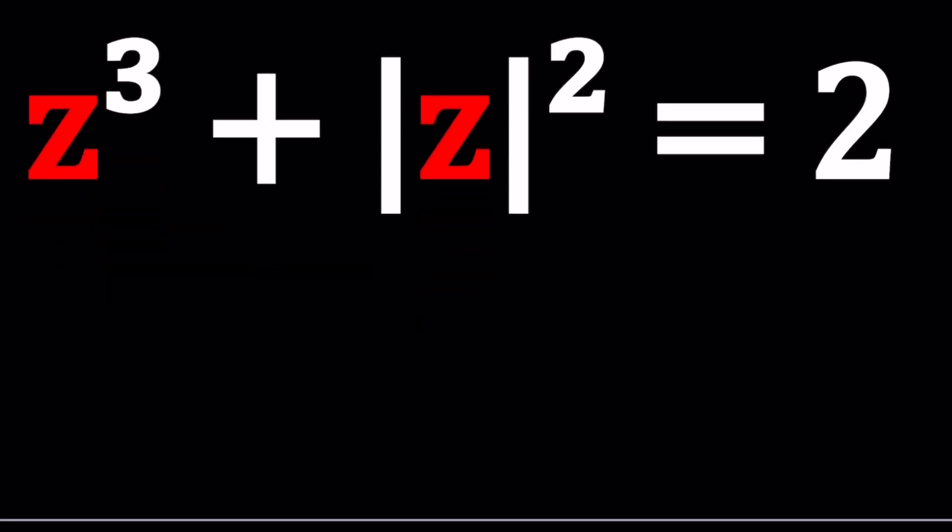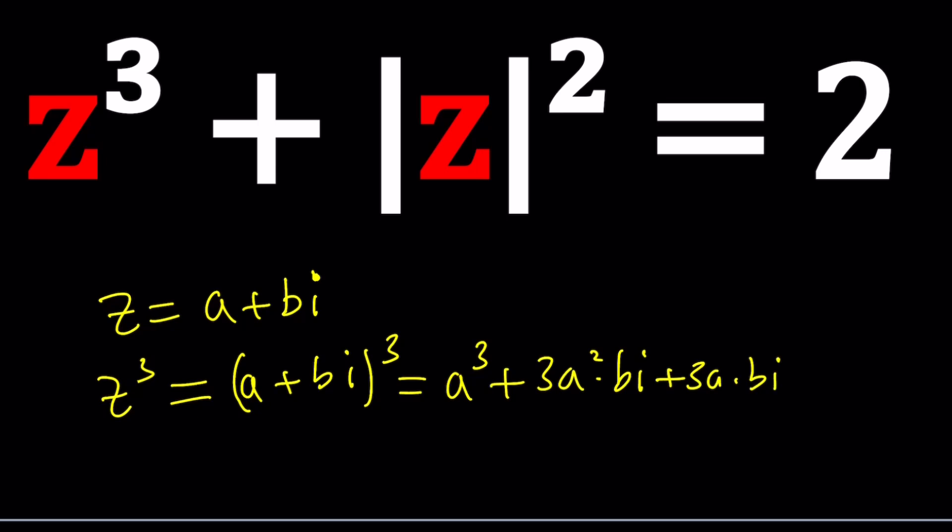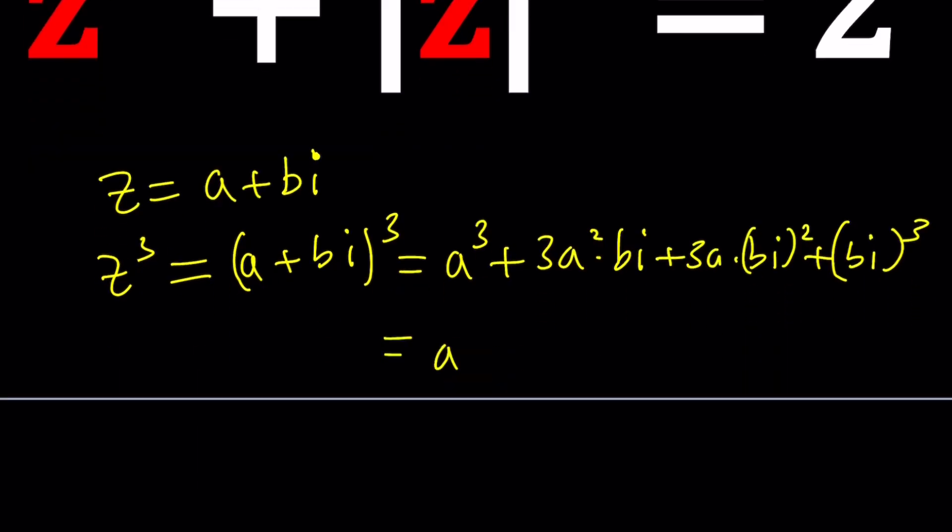I'm going to go ahead and replace z with A plus B I. Of course, what else could I replace it with, right? So now if I do that, I'm going to have to evaluate z cubed from here. Let's go ahead and cube this guy. And to cube it, you have so many different ways. You can do the binomial theorem, like this: A cubed plus 3 A squared B I plus 3 A B I squared plus B I cubed. And then if you expand it, A cubed plus 3 A squared B I. Now B squared I squared is just going to be negative B squared, so it's going to be negative 3 A B squared. And I cubed is negative I, so we can write it as minus B cubed I.